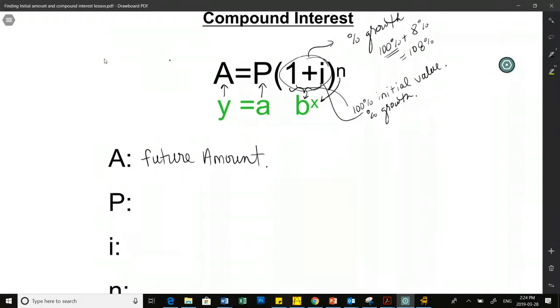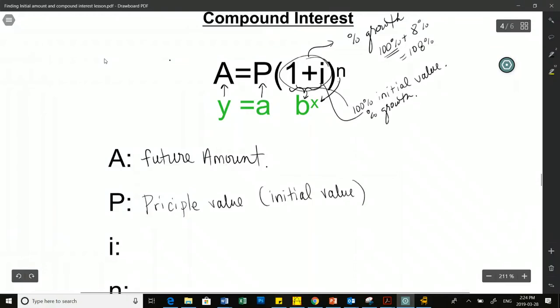P is what we call our principal value, which is essentially initial value. But when we talk about interest, it's called the principal. Can we try again? I did not understand it.